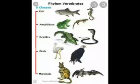Since Vertebrata is a large group, it is further divided into five classes: Pisces, Amphibians, Reptiles, Aves, and Mammalia. In the next video lesson, we will deal with phylum Vertebrata and all these different classes of vertebrates in detail.